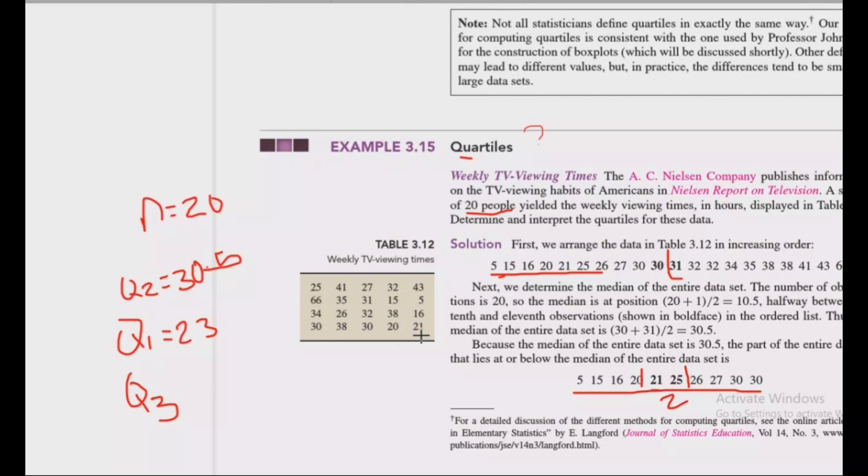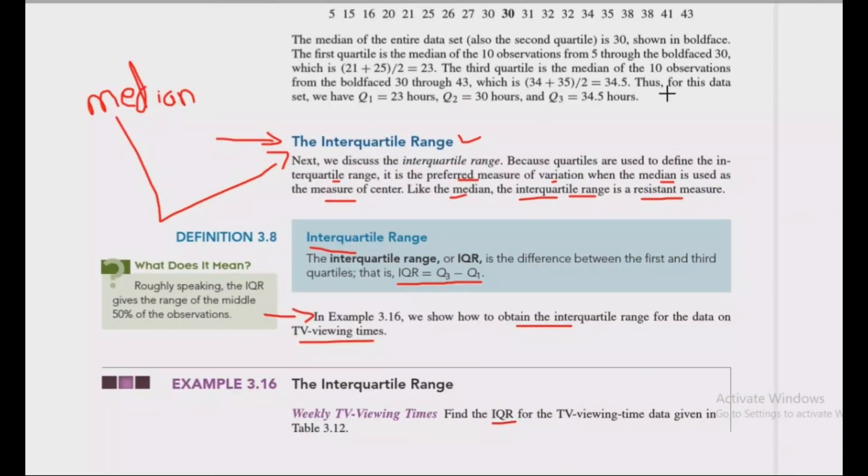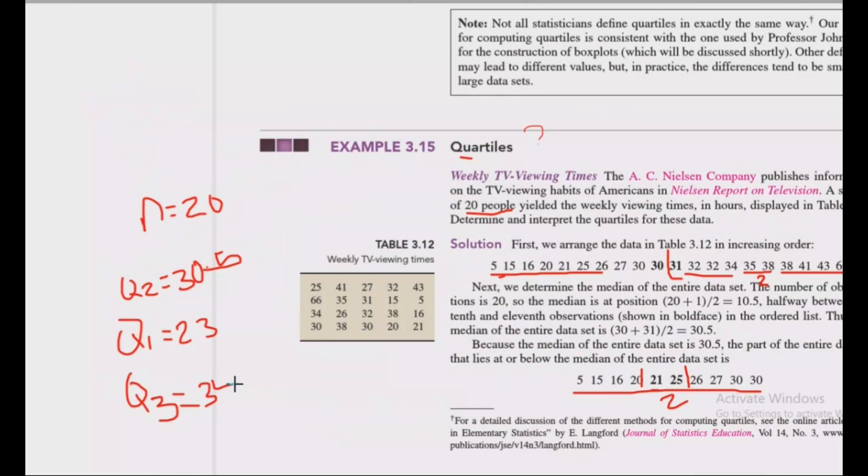Let's consider the four equal parts. Q1 is calculated: 21 plus 25 over 2 equals 23. Q3 is 35 plus 38 over 2 equals 36.5.